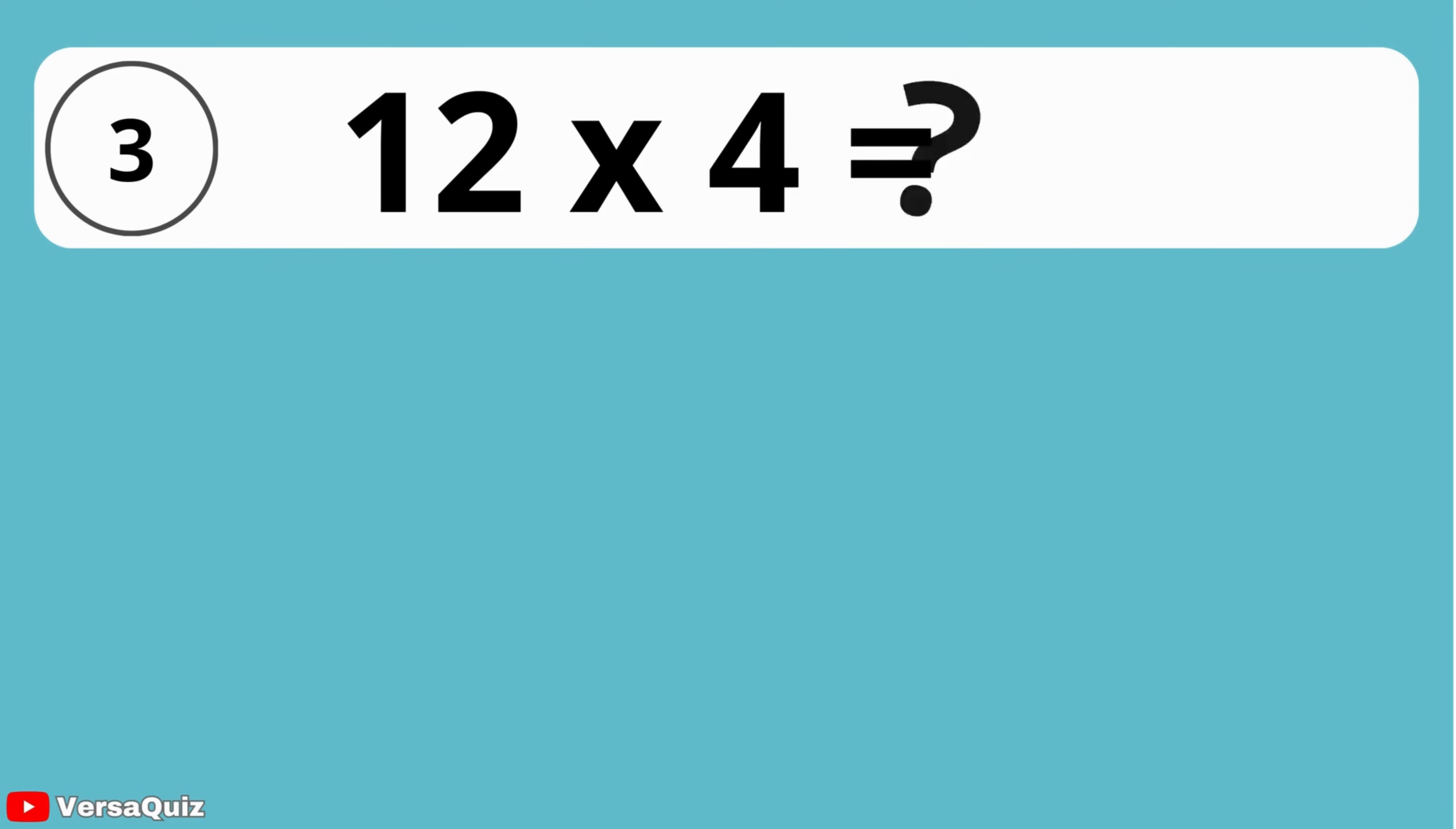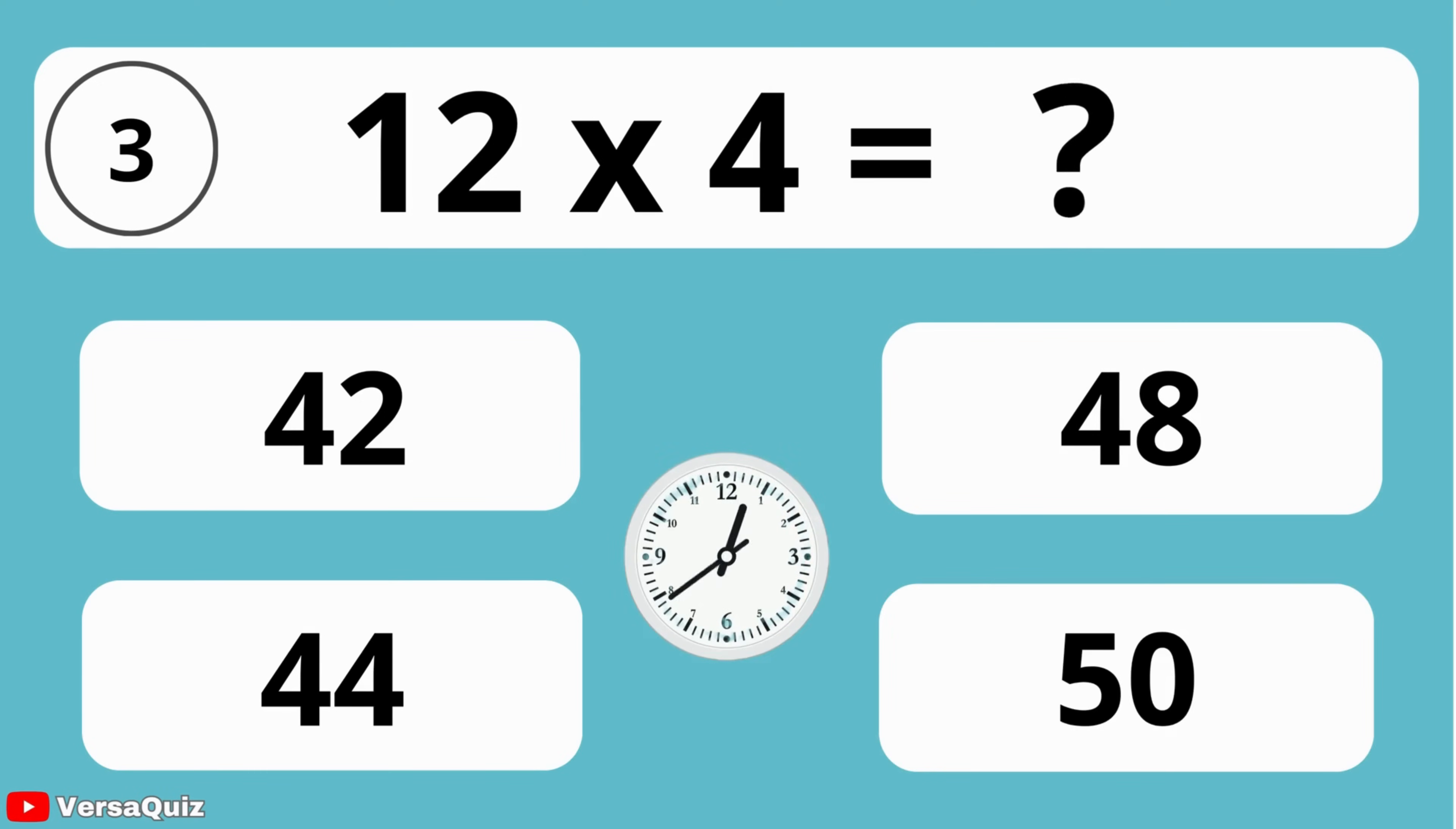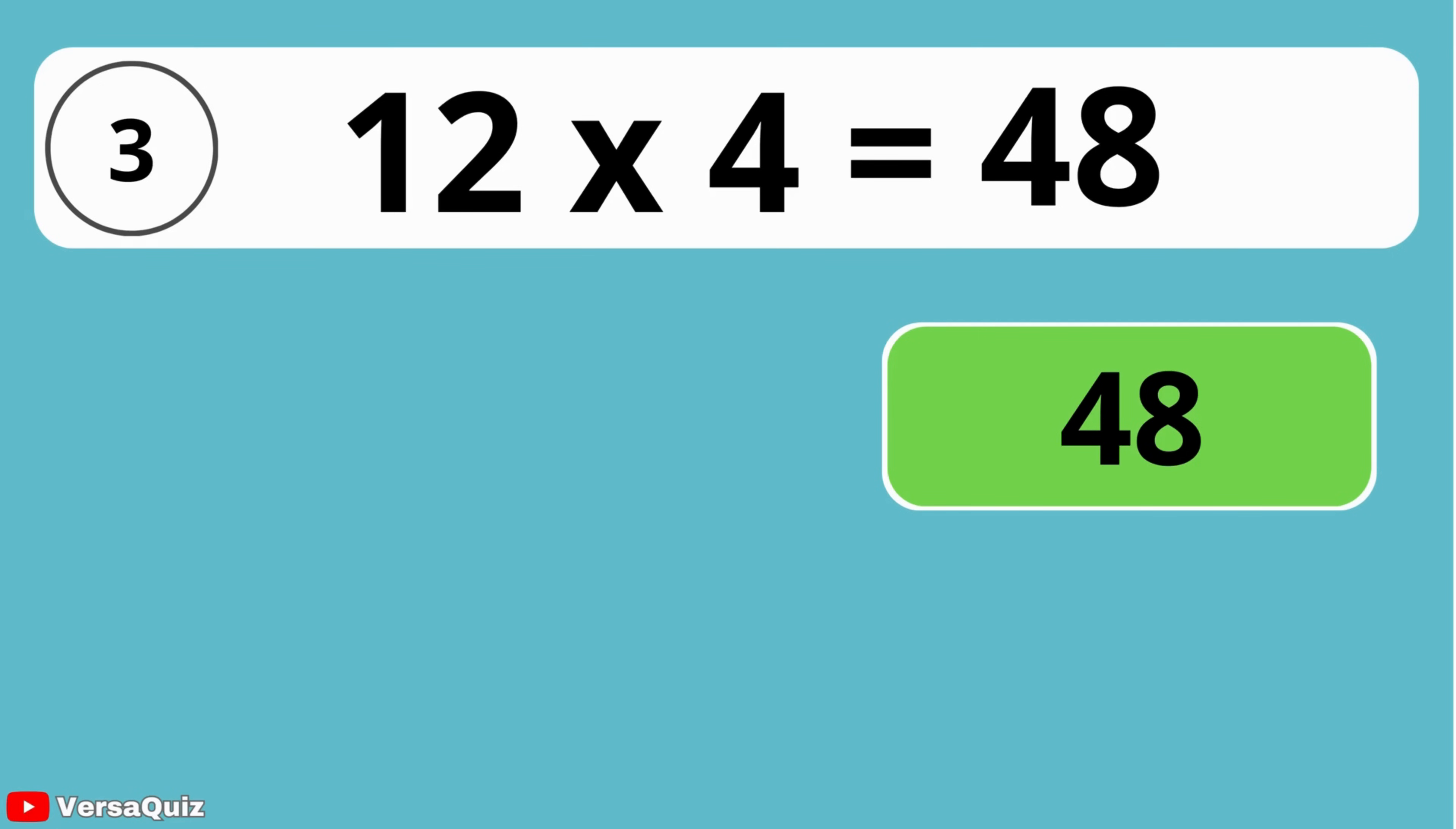What is the answer when you multiply 12 and 4? 42, 48, 44, or 50? The answer is 48. Multiplying 12 by 4 gives you 48.